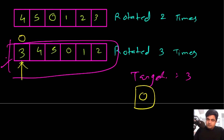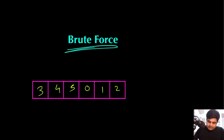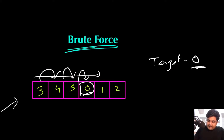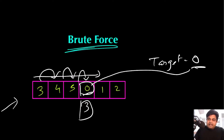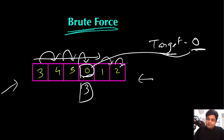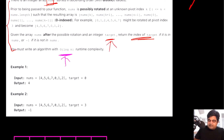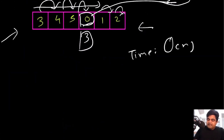The first approach is a brute force approach. Given the array and a target value of zero, we simply iterate over the array one by one until we find the target value. Whatever index position it is at — which is three in this case — we return that as the answer. If we reach the end without finding it, we return -1. However, this solution has a time complexity of O(n), and the problem explicitly requires O(log n), so it's not good enough.